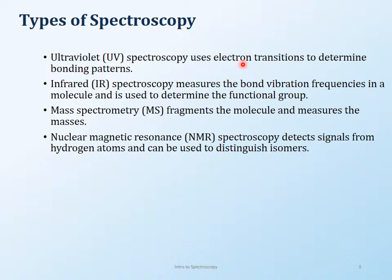Basically the four spectroscopies we will talk about are ultraviolet spectroscopy, infrared spectroscopy, mass spectroscopy, and nuclear magnetic resonance. UV, IR, and NMR all come from the electromagnetic spectrum, whereas mass spectroscopy is a completely different kind. For the first three, you need to understand the relationship between the electromagnetic spectrum, energy, frequency, and wavelength.